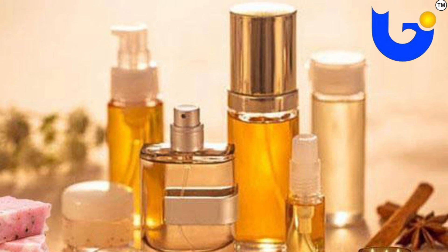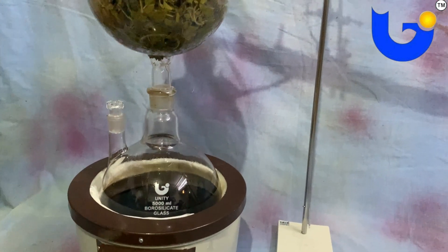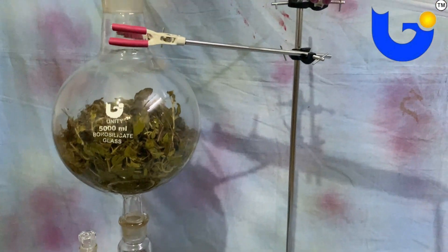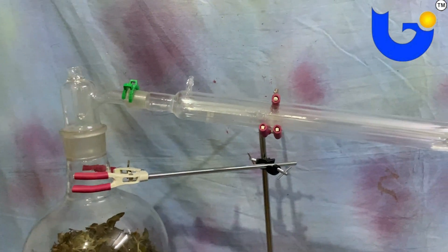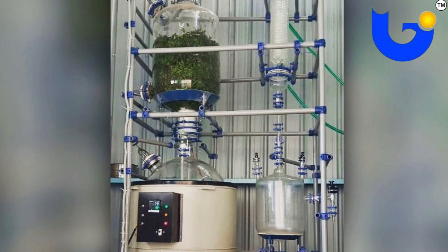Now coming to the next part, how does essential oil distillation unit work? Essential oil distillation unit is available in two types: one is laboratory unit and second is industrial unit.